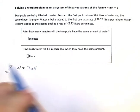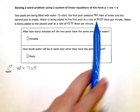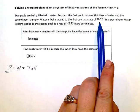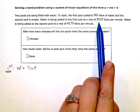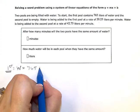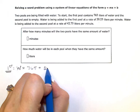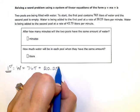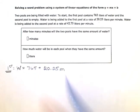And then I'm adding water to the first pool at a rate of 20.25 liters per minute. So plus 20.25 liters every minute, and I'm going to use m for minute.